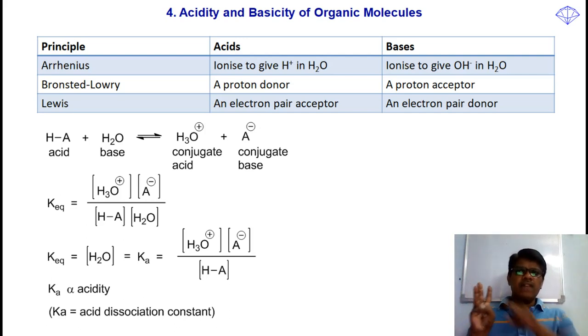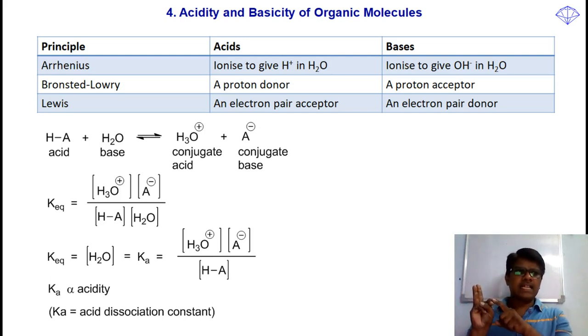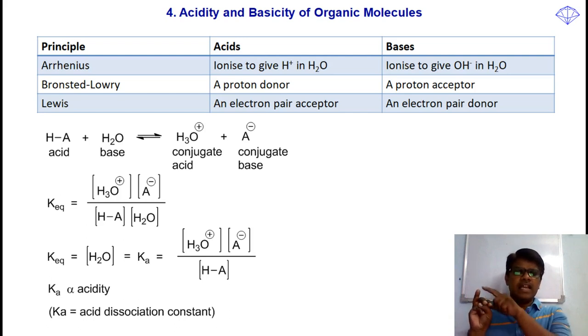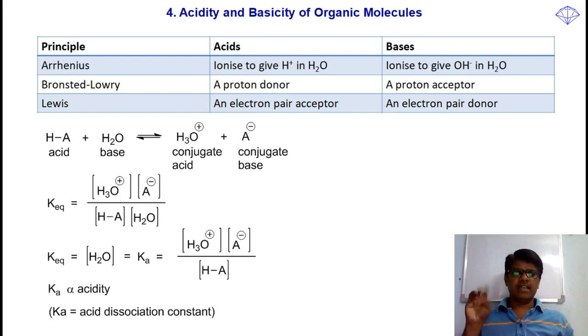What are they? The first theory is Arrhenius theory. The second theory is Bronsted and Lowry theory. And the third theory is Lewis theory.